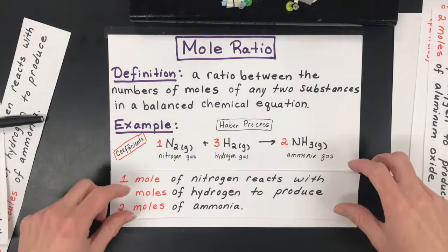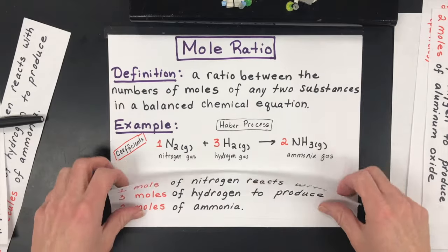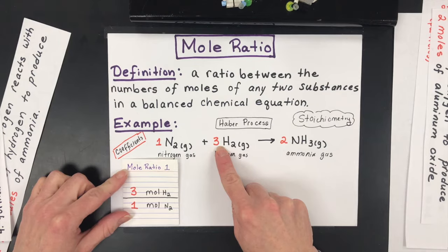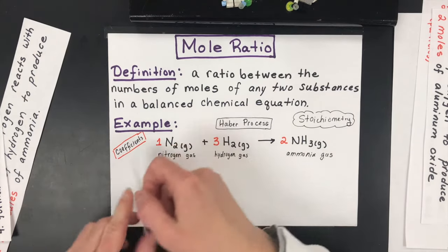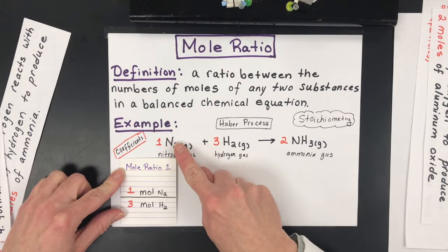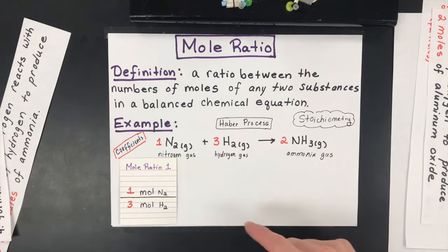So here are the mole ratios you can write from this. I can say that for every one mole of nitrogen I'm going to need three moles of hydrogen to react with it. Or the opposite of that is to say that I need three moles of hydrogen to make one mole of nitrogen react with it. That's mole ratio number one.